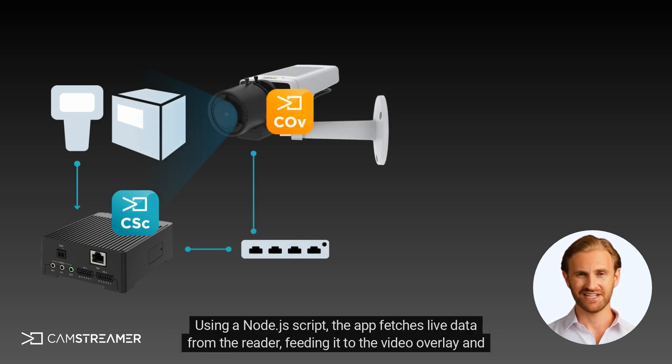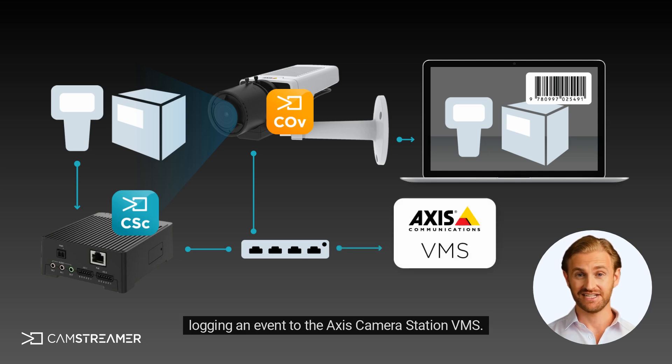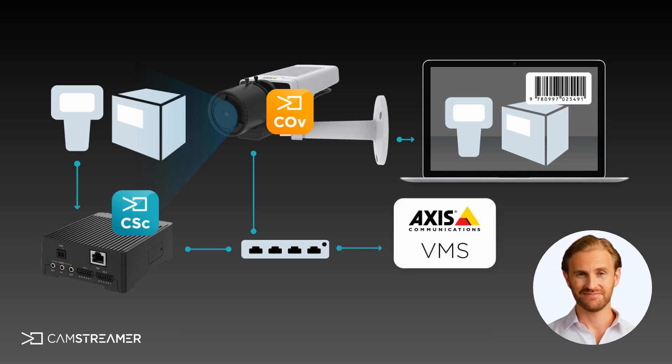Using a NodeJS script, the app fetches live data from the reader, feeding it to the video overlay and logging an event to the Axis Camera Station VMS.